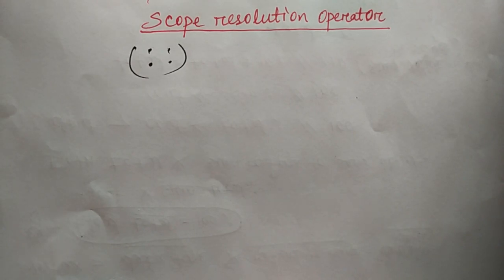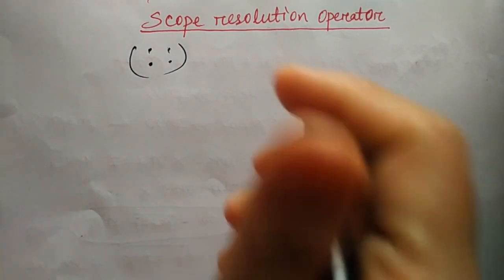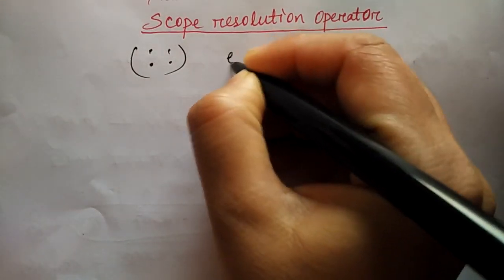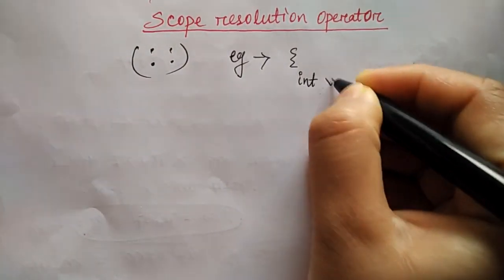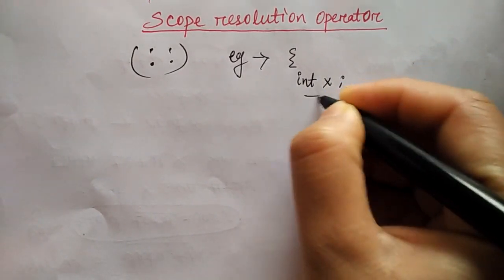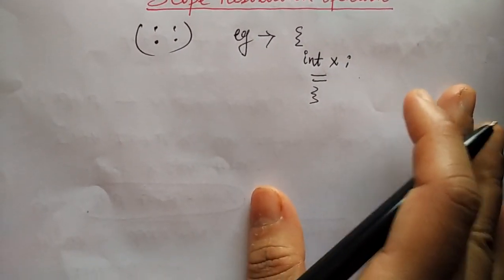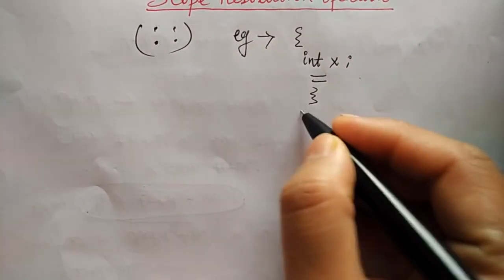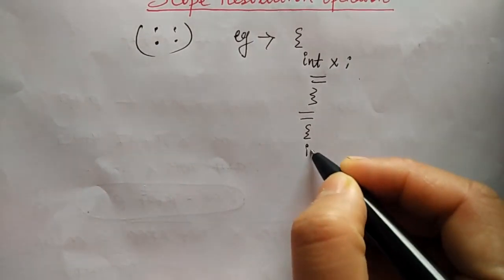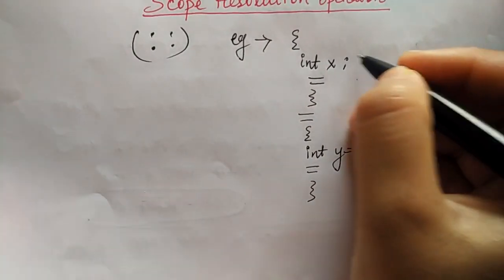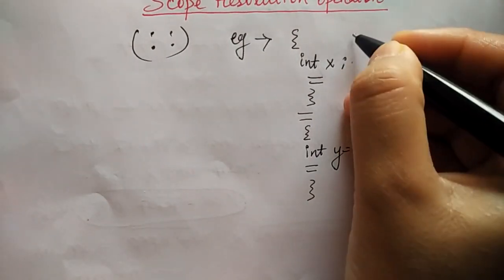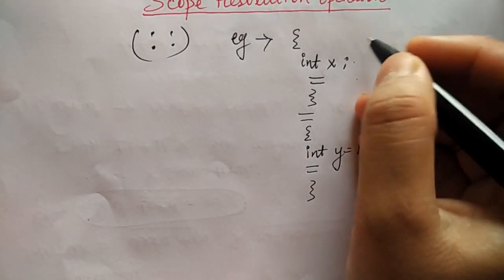If a variable is declared in a particular function, then the variable is local to that same function. For example, here we have a function where I have written int x and some statements, and it ends. Then I have written int y equal to 1 and the statement ends. So this is the scope of x.